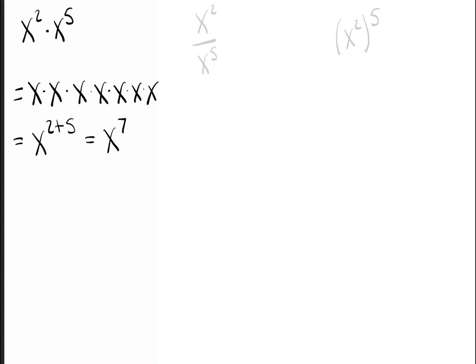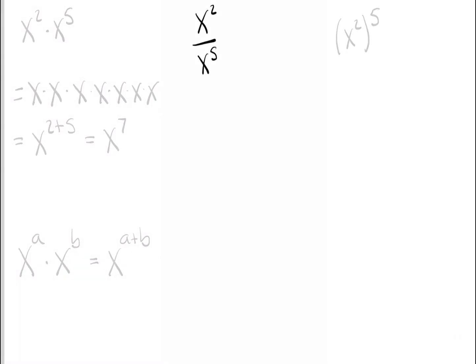You can see what the general rule is going to be, because x squared times x to the fifth was x to the two plus five, or x to the seven. And that is, indeed, what the general rule will be. If I have x to the a times x to the b for whatever numbers a and b you want, that's just going to be x to the a plus b.